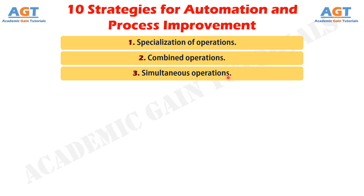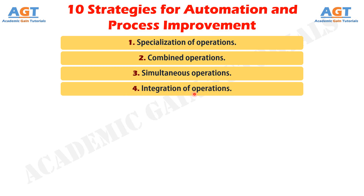Strategy No. 4: Integration of Operations. This strategy involves linking several workstations together into a single integrated mechanism, using automated work handling devices to transfer parts between stations. In effect, this reduces the number of separate work centers through which the product must be scheduled. With more than one workstation, several parts can be processed simultaneously, thereby increasing the overall output of the system.